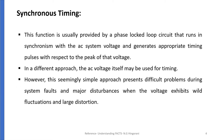Synchronous timing is usually provided by a phase-locked loop, or PLL circuit, that runs in synchronism with the AC system voltage and generates appropriate timing pulses with respect to the peak of that voltage. In a different approach, the AC voltage itself may be used for timing, but it presents difficult problems during system faults and major disturbances when the voltage exhibits wild fluctuations and large distortions. Hence, we need a PLL block to give us the exact instant at which the voltage peak is achieved.